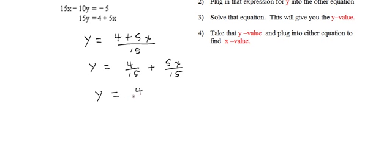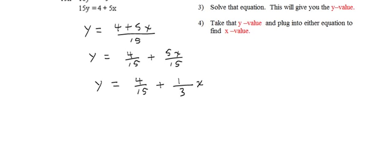So we have y is equal to 4 over 15 plus well, 5 will go into 5 once, 5 will go into 15 three times. So 5 over 15 is 1 over 3. And then just put the x out to the side here. You could leave it on top. It really wouldn't matter. So that's what y is.